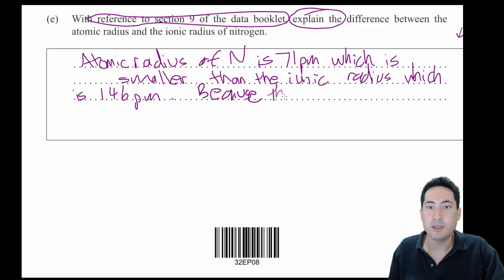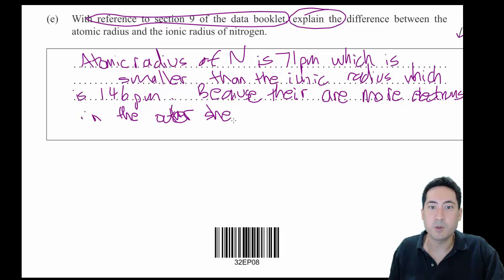Because there are more electrons in the outer shell, because it's gained three electrons. Because there are more electrons in the outer shell. Now the mark scheme also has, and only has actually, that what I've just written there, words to that effect.